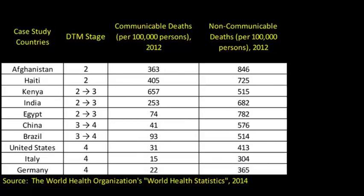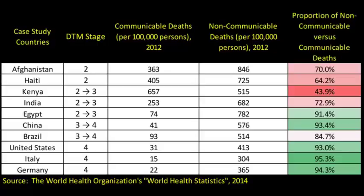There's another pattern: stage two and stage three countries also have higher levels of non-communicable deaths — they just have more deaths in general. What we really want to focus on is the stage four countries at the bottom, where a much higher proportion of overall deaths are from non-communicable or non-infectious diseases. Looking at the proportion of non-communicable versus communicable deaths in the far right column, stage four countries show a much higher percentage of non-communicable deaths than stage two and stage three countries. This further shows evidence of the epidemiological transition model.